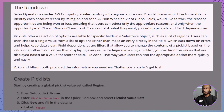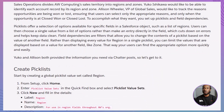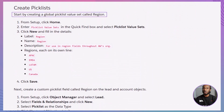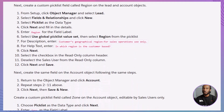Yuko and Alison have provided all the necessary information via Chatter posts, so let's dive right in and get started. In this walkthrough, we'll complete the steps for your hands-on challenge together. You can follow along in your Trailhead playground. Here's what we'll be doing. First, we'll create a global picklist value set called Region. Then, we'll add a custom picklist field called Region to both the Lead and Account objects using that global picklist.